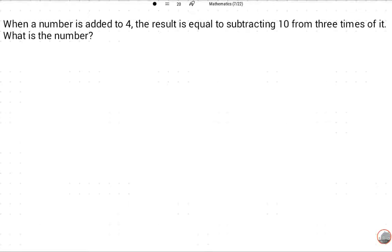We will discuss how to solve this question. Let's read this question and try to suppose variables. When a number, what is the number? We don't know, so we will suppose x. First we read the question and then we suppose how to suppose variables. When a number is added to 4, the result is equal to subtracting 10 from 3 times of it.